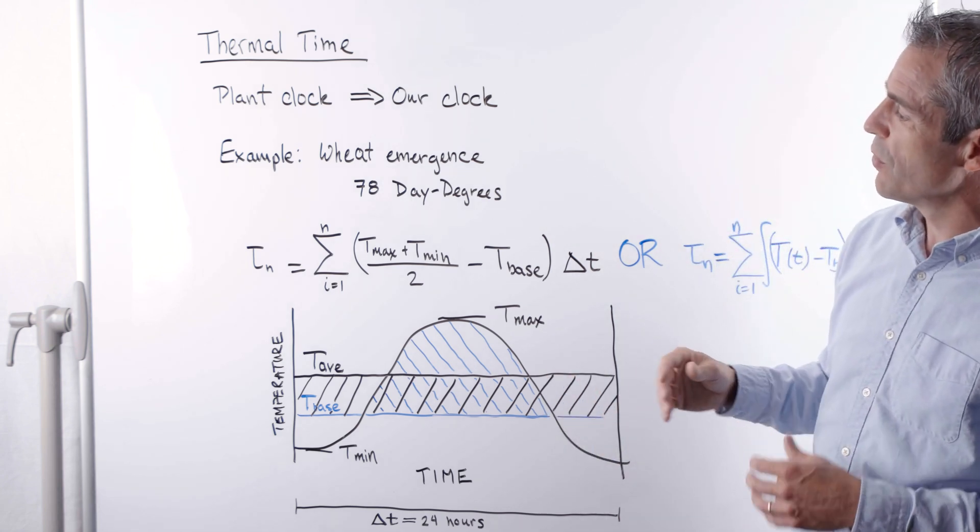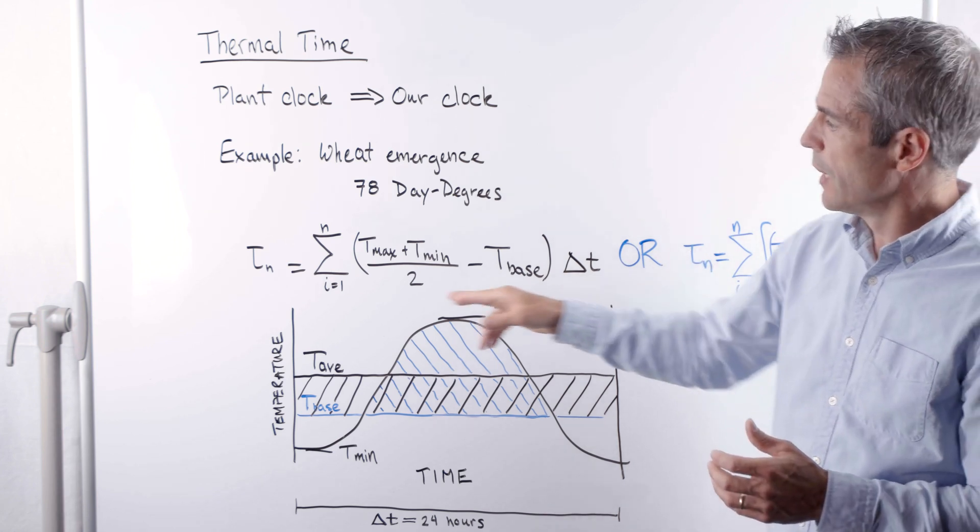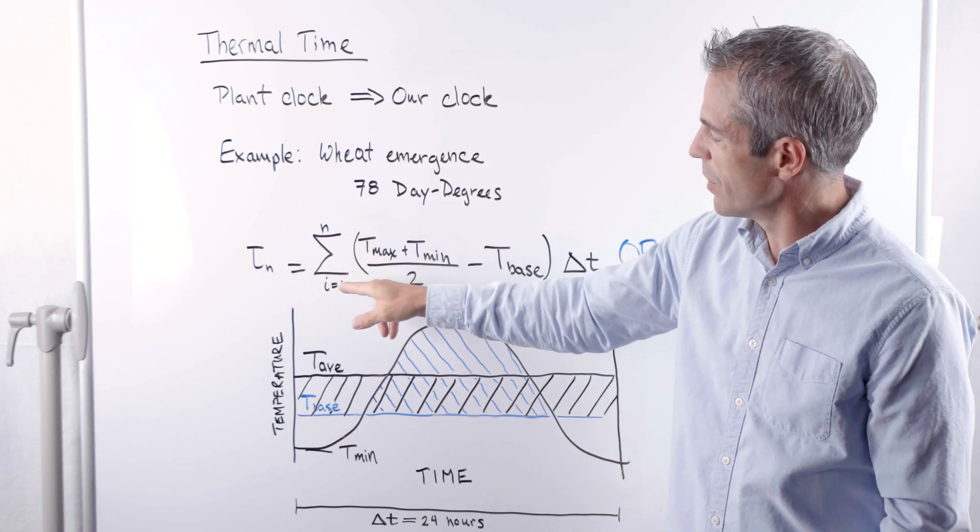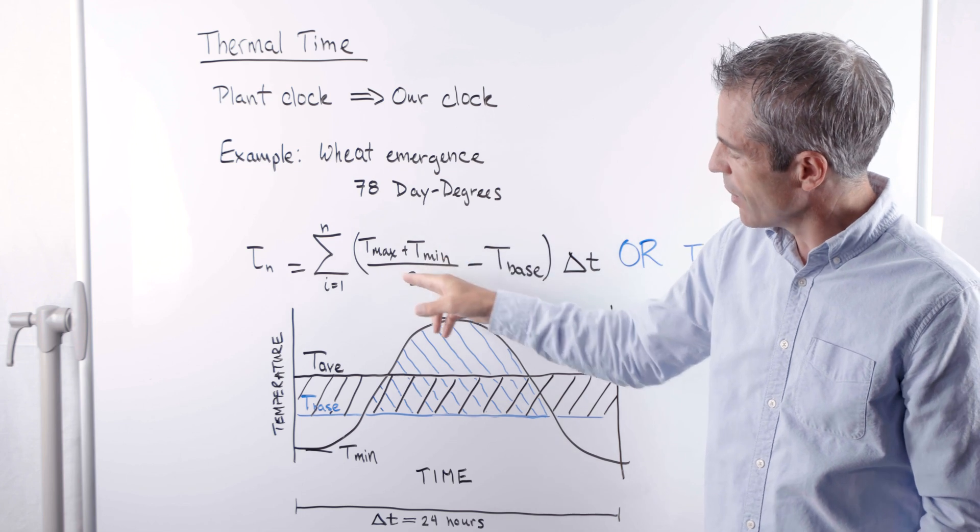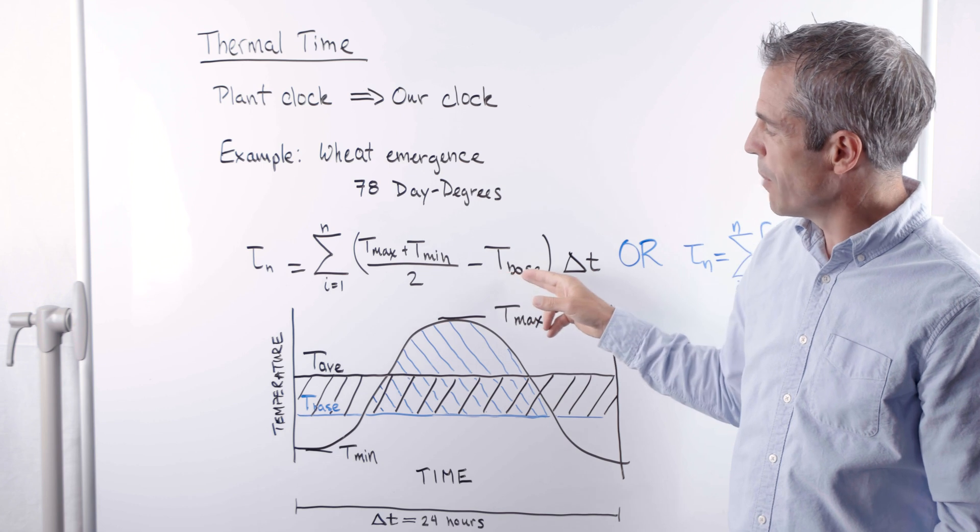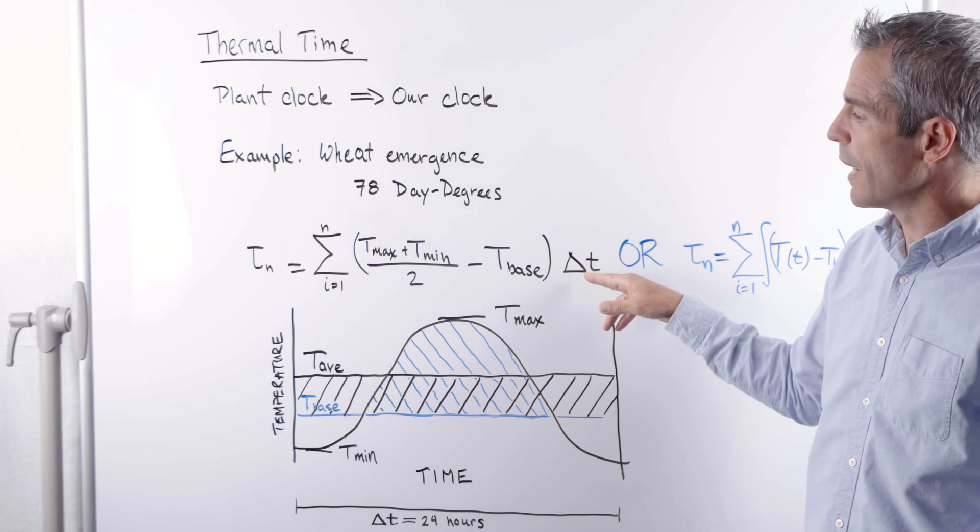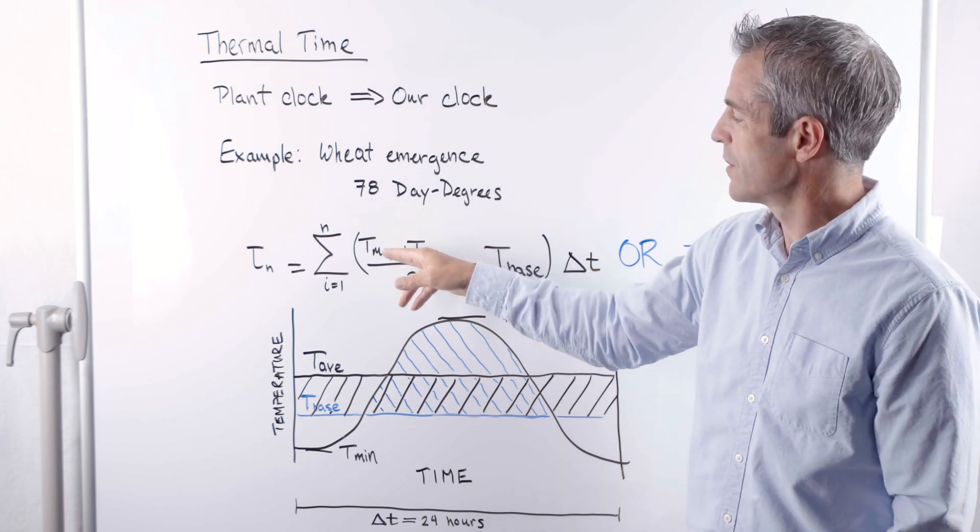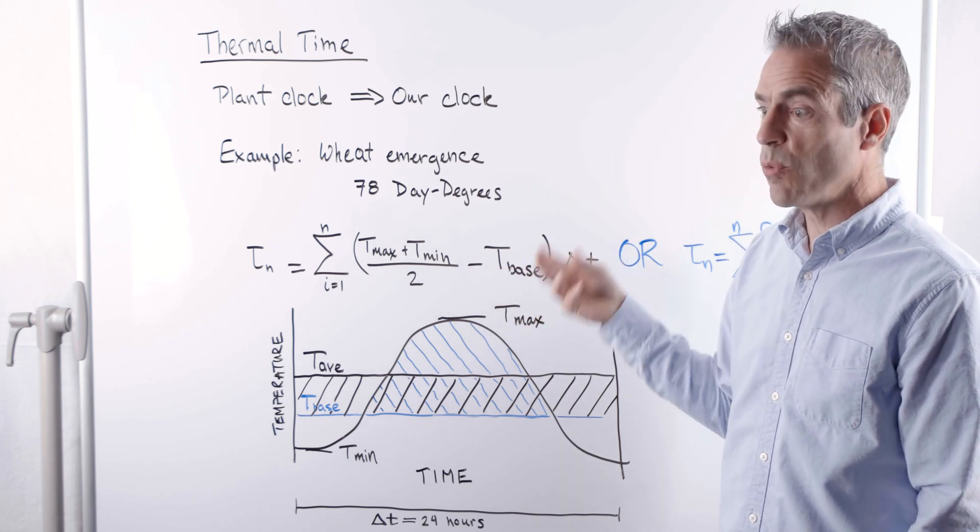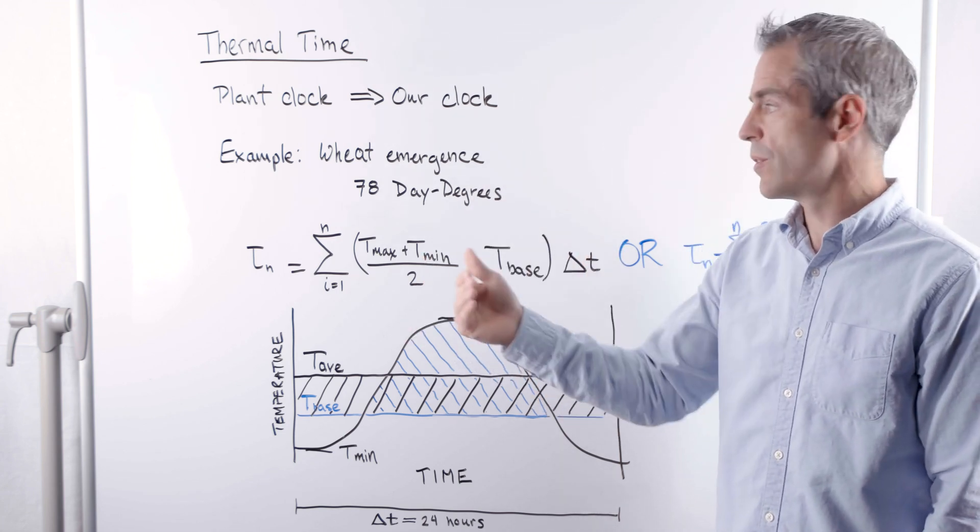And the way we do this is through this equation here that's actually when we look at it pretty simple. It just says that we can sum thermal time by taking this summation of day 1 to day n of the average temperature, meaning T max plus T min divided by 2 minus a base temperature and then multiply by a time step. And in this case, our time step is just one day. So basically, the whole analysis is simply average temperature minus a base temperature. We get that value each day and we keep summing until it reaches a value that tells us that we've progressed from one stage to another stage.